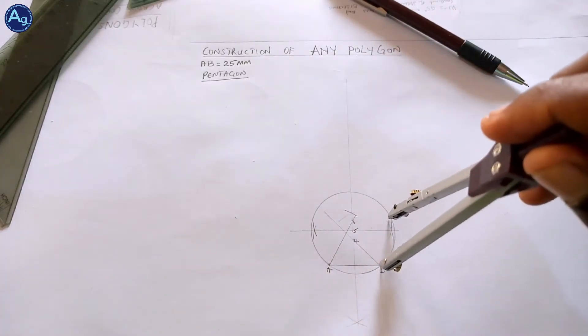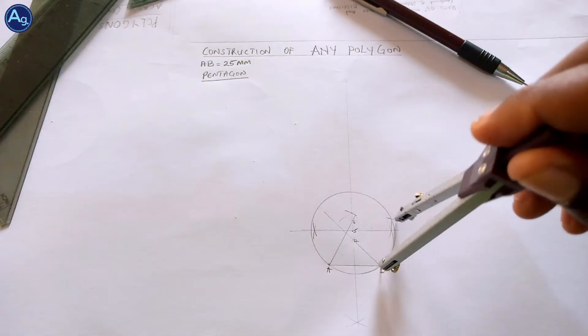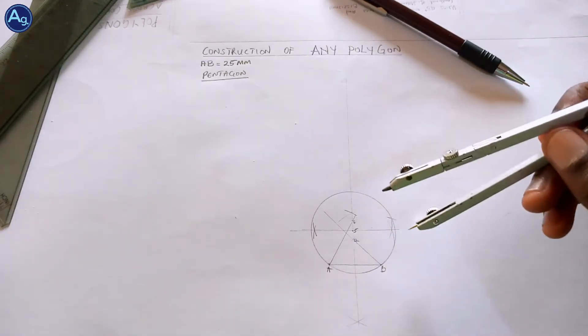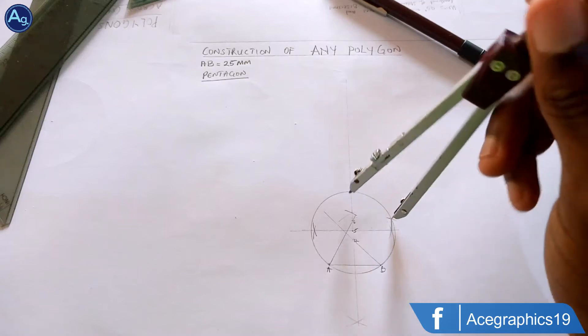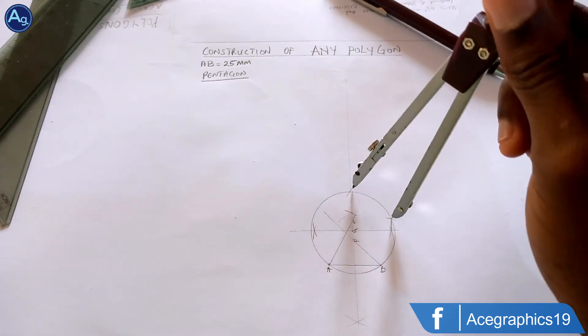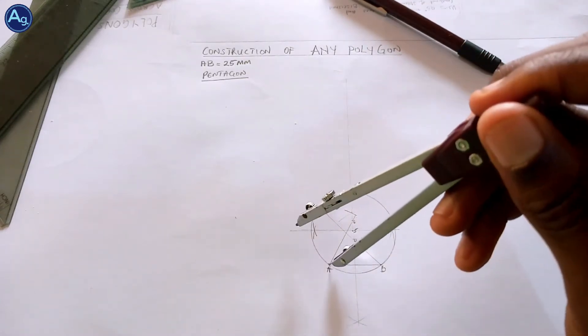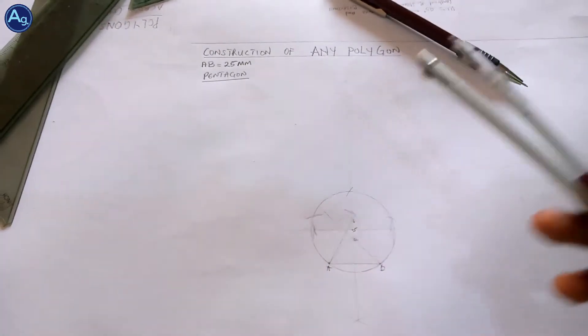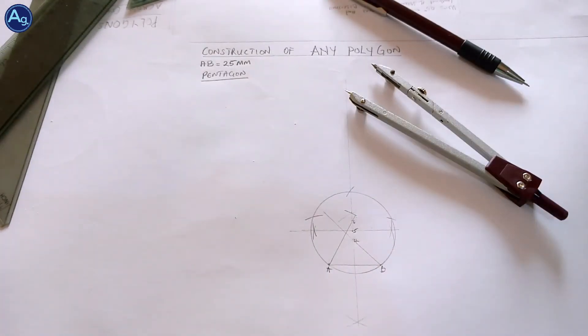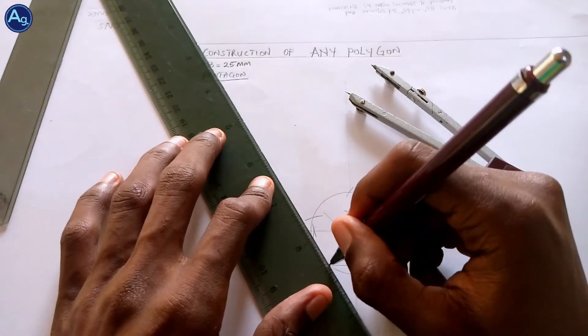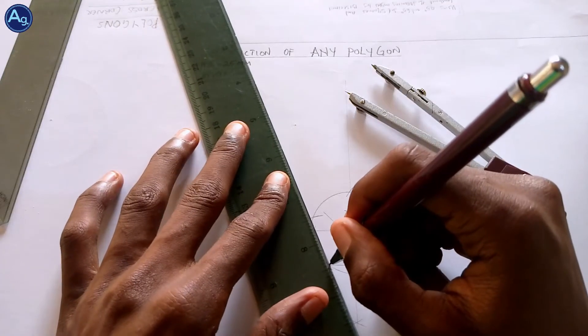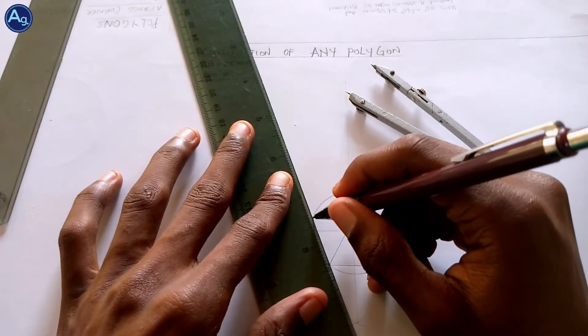And on point B mark anywhere on the circle, come to this point mark, come to A mark. So now you have 5 points on your circle, all you have to do is join them. Just join the points.